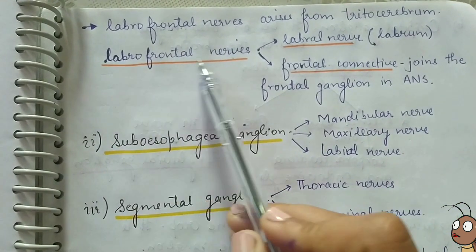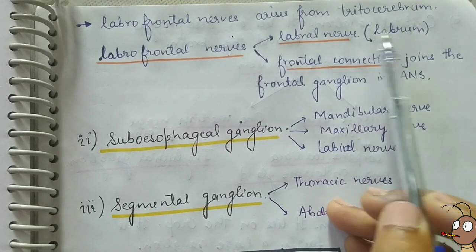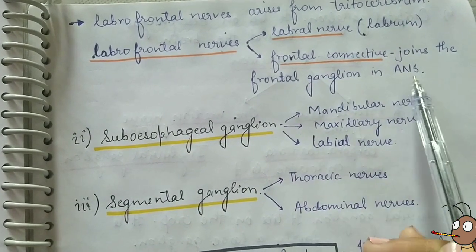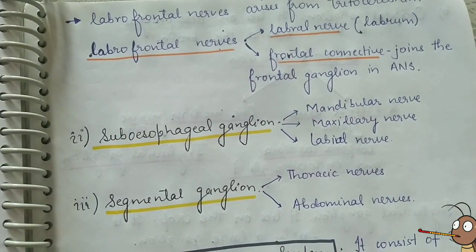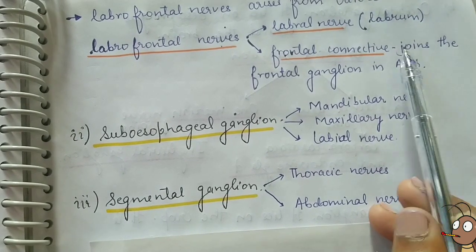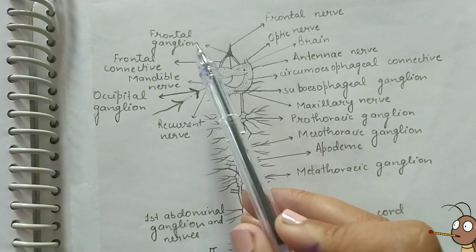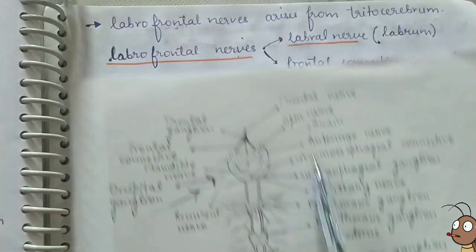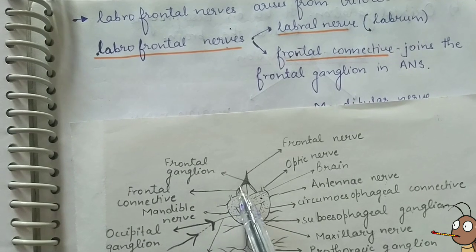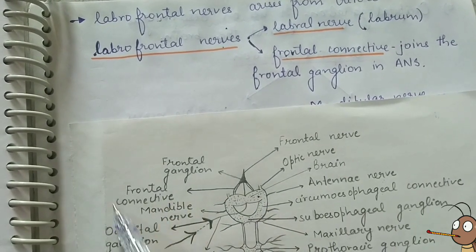The labrofrontal nerve arises from the tritocerebrum, which is the hindbrain, and is further divided into the labral nerve and the frontal connective. The labral nerve supplies to the labrum, which is the upper part of the mouthparts. The frontal connective joins the frontal ganglion of the autonomic nervous system, connecting the frontal ganglion to the brain.